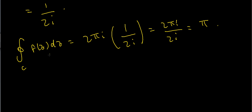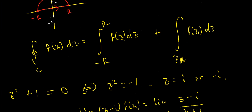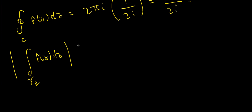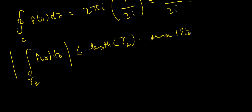Now I have to deal with the integral over the arc gamma sub r, and to do that I'll use the estimation lemma. The estimation lemma says the absolute value of the integral over gamma sub r of f(z) dz is less than or equal to the length of gamma sub r times the maximum value of |f(z)| as z varies along gamma sub r.